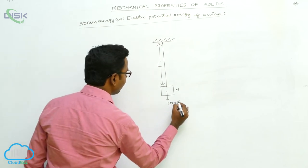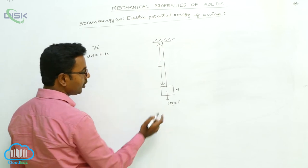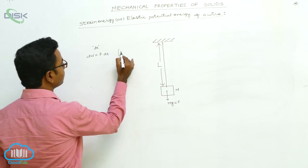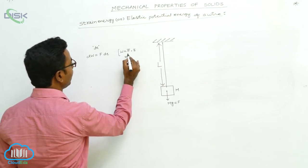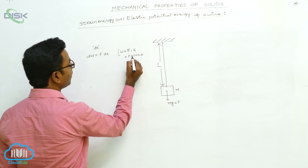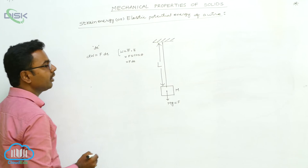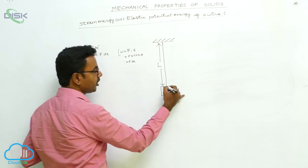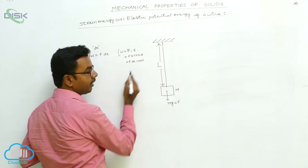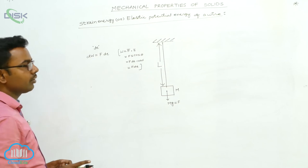Let the small work done by the applied force to produce the small elongation DE be DW, given by DW = F·DE. We know that work equals F-bar dot S-bar, which gives F·S·cos θ. Here F is the applied force (mg), S is the displacement DE, and θ is the angle between force and displacement. Since force and displacement DE are both in the downward direction, θ = 0°, and cos 0° = 1. So DW = F·DE.